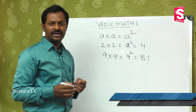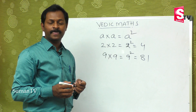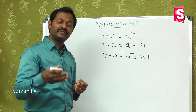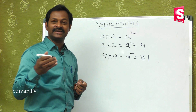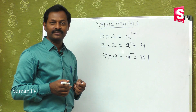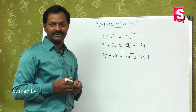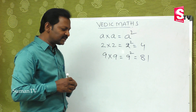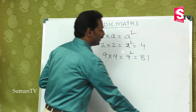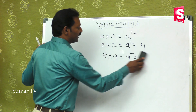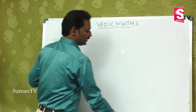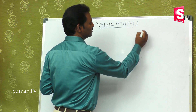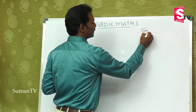Up to single digits we can easily remember squares, but when numbers go up to 10, 11, 12, 13, 14, 15, 16, 17 it will take some time. So in squares also, we can apply some special rules to make calculations easier.